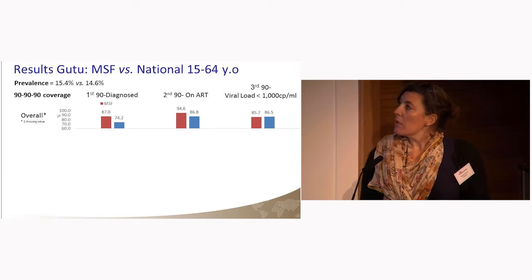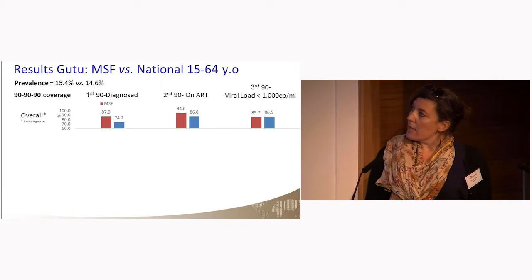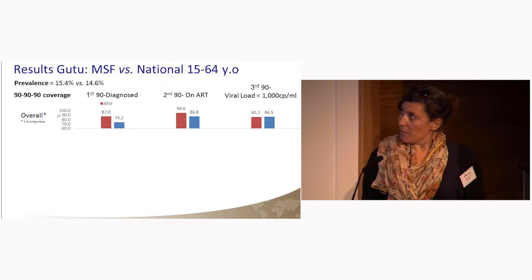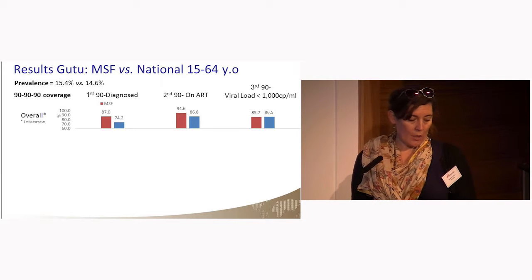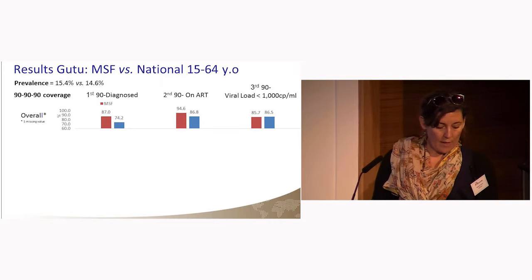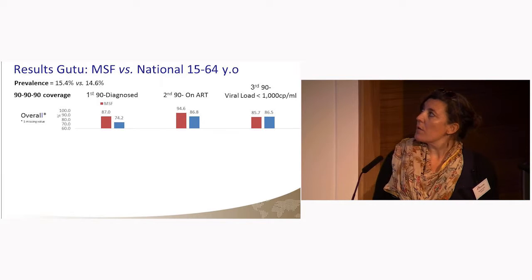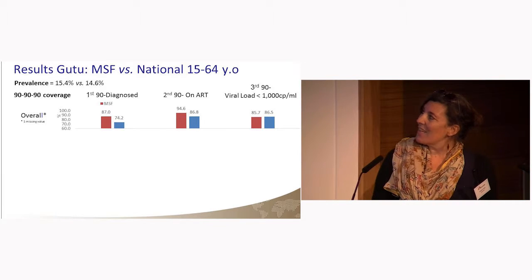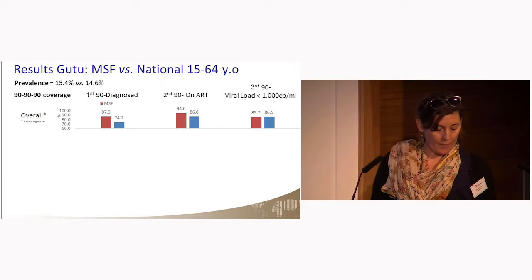I will now show the results comparing the 90-90-90 coverage between the surveys implemented in GU2 and the national survey. To do so, we restricted our results to the age group 15 to 64 years to match with the age group of the national survey.